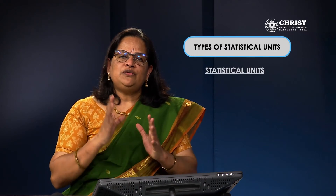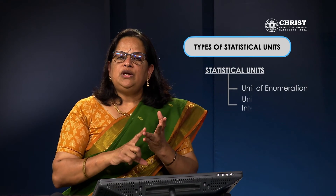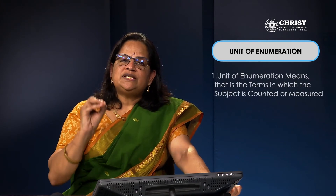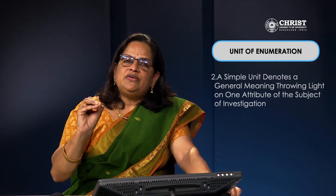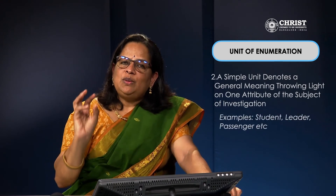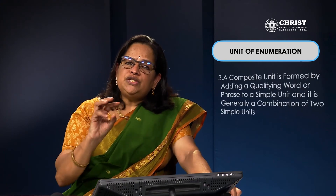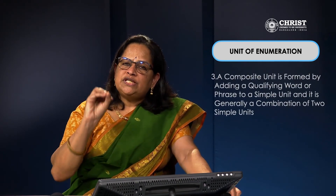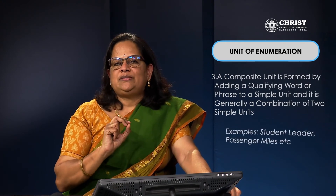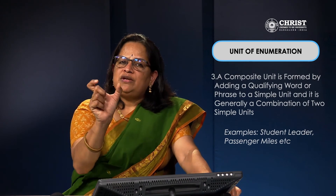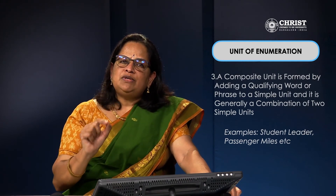Types of statistical units are divided into two: units of enumeration and units of analysis and interpretation. Units of enumeration are again divided into simple units and composite units. A simple unit denotes a general meaning, throwing light on one attribute of the subject — examples include student, leader, or passenger. A composite unit is framed by adding a qualifying word or phrase to a simple unit, generally a combination of two simple units — for example, student leader, class representative, or passenger miles.